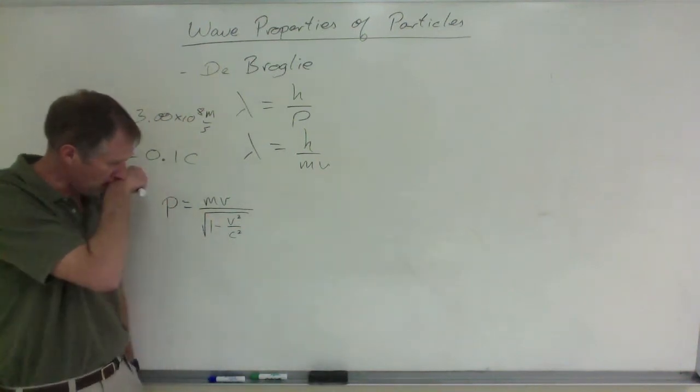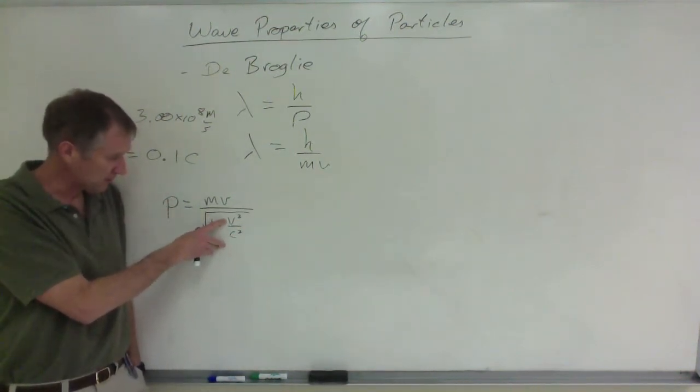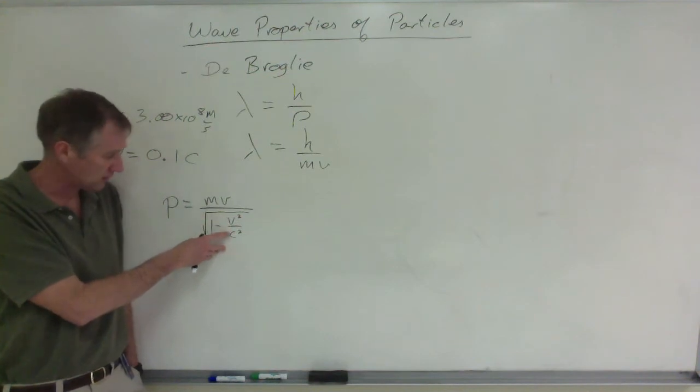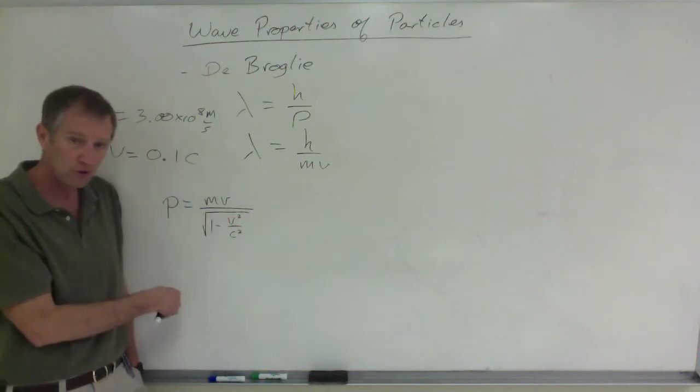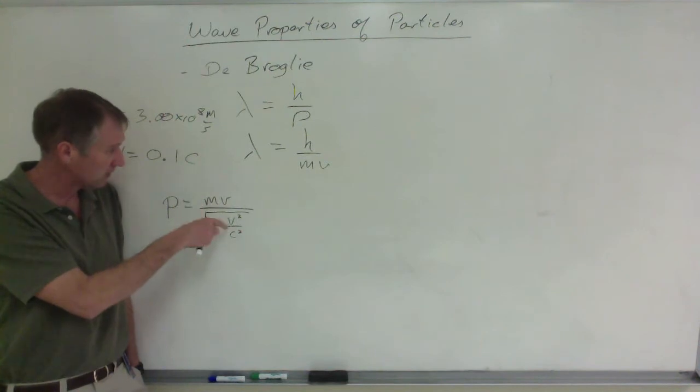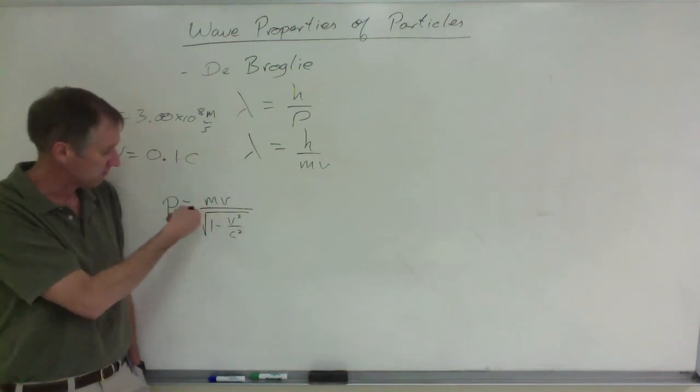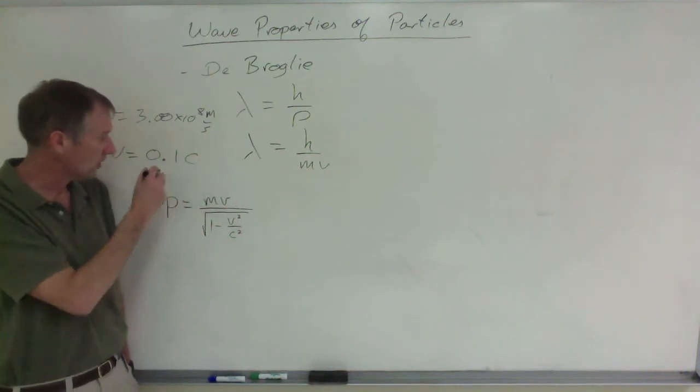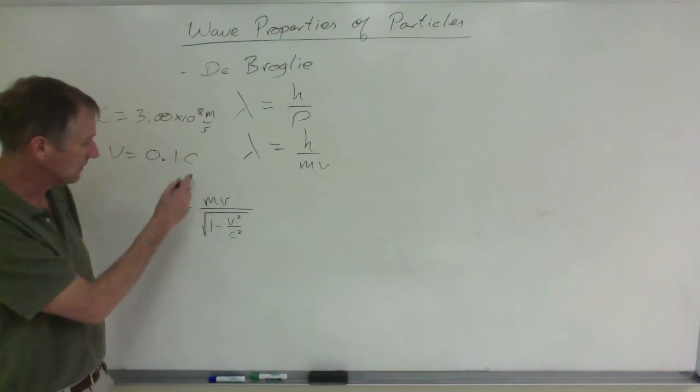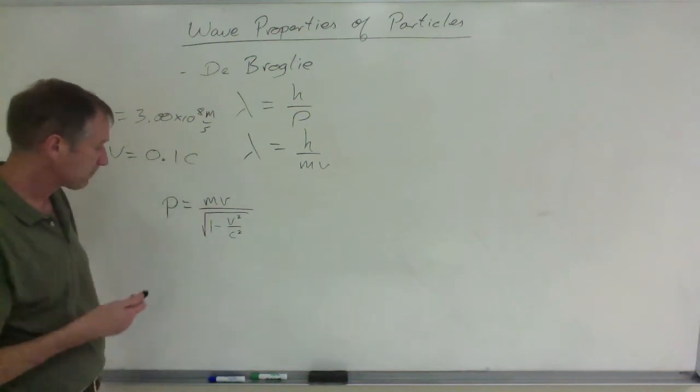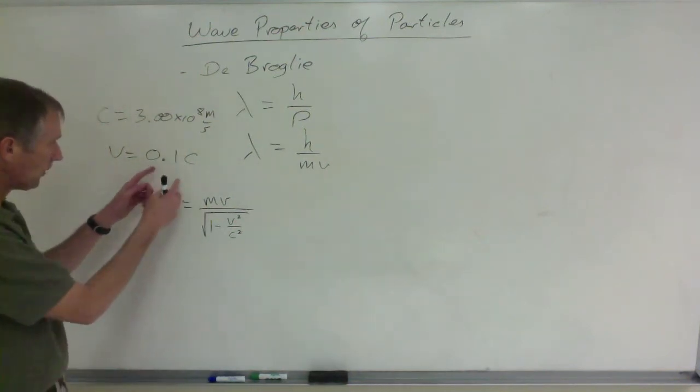Keep in mind that this is a really big number, and for just about anything you can think of it's traveling way smaller than that, and then you square it which makes it even smaller. So basically you're just dividing by 1 all the time because this is 1 minus an infinitesimally small number, which just means p equals mv. But as you start getting higher and higher, you need to take that into account.